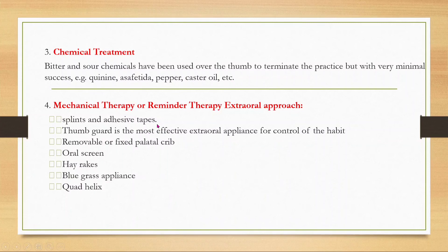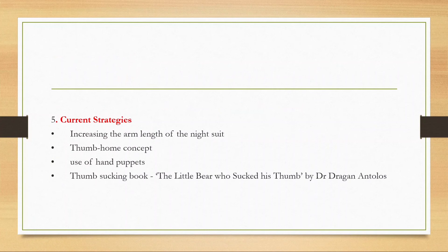In chemical treatment, bitter or sour chemicals such as quinine, pepper, or asafoetida can be applied, but these are found to be not very effective. For mechanical or reminder therapy, splints, adhesive tapes, oral screens, quad helix, removable or fixed palatal crib, thumb guard, and home concepts such as hand puppets or increasing the arm length of a night suit can all be used.